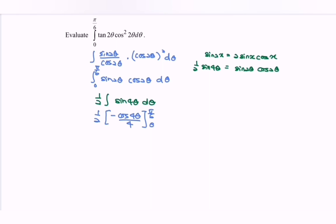Rewrite the situation. So we will have the situation negative cos 4 theta over 8. So pi over 6 and then 0. So if we substitute the situation, then we have the situation in here.